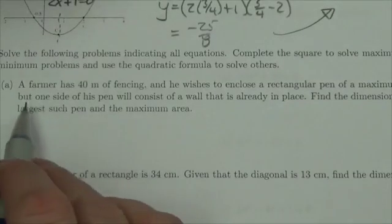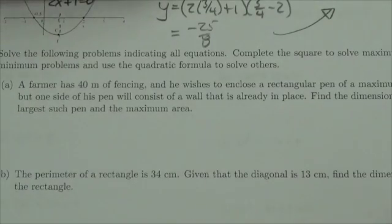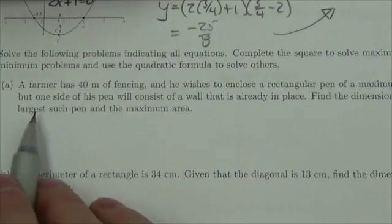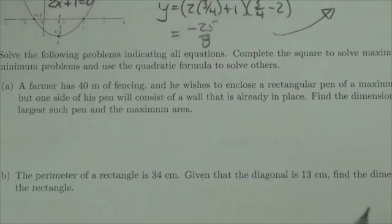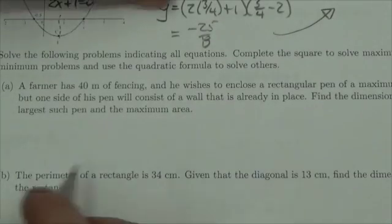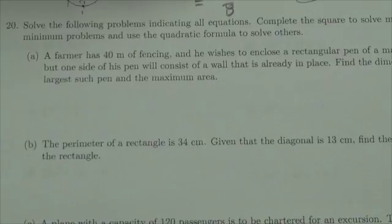The first one is a farmer has 40 meters of fencing and he wishes to enclose a rectangular pen of maximum area, but one side of his pen will consist of a wall that is already in place. Find the dimensions of the largest pen and maximum area.